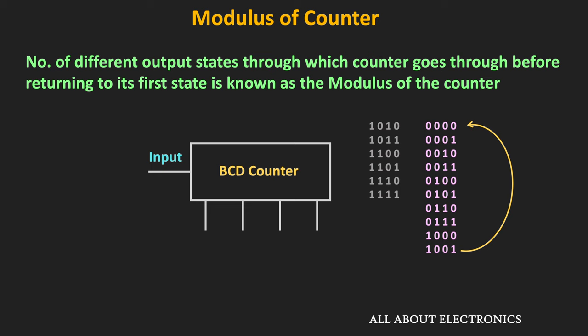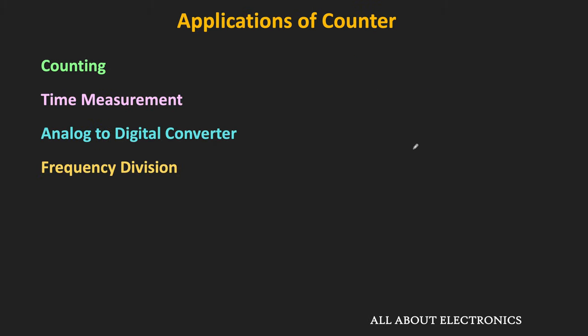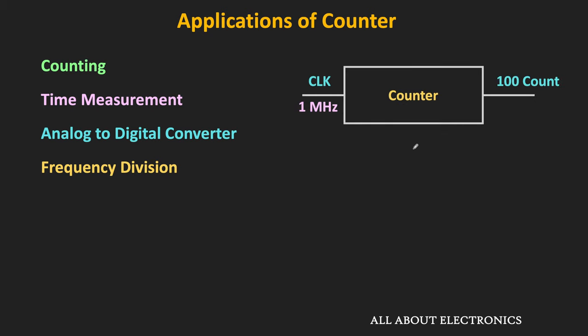These counters are used in many different applications. Obviously they are used in counting applications, but apart from that, they are also used as timers as well as in time measurement applications. For example, if a 1 MHz clock signal is applied as input to a counter, each clock period is 1 microsecond. If the decoding logic is connected at the output and designed to generate a logic high when the counter reaches a count of 100, and at the same time resets the counter to 0, then we can generate periodic pulses at every 100 microseconds.